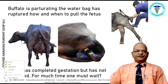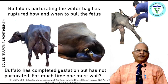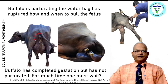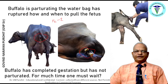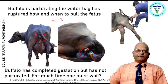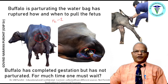A frequent question is: when the water bag has ruptured, how and when should you pull the fetus? If the second water bag has ruptured, wait at least half an hour and up to a maximum of two hours. If fetal delivery is not progressing, you can assist. Farmers who immediately pull the visible limbs risk the fetus pulling back, causing deviation or flexion of a limb, and converting a normal delivery into a difficult birth. Traction should not be applied on fetal limbs unless both limbs and the head are out.